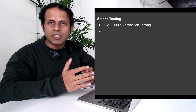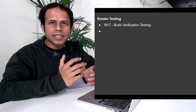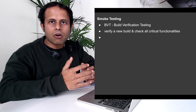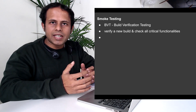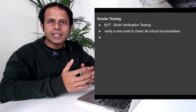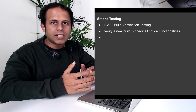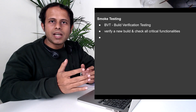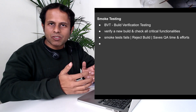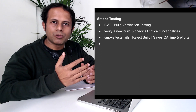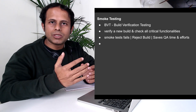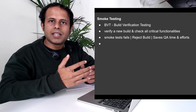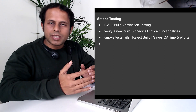Smoke testing is done to check that all the critical functionalities are working. As soon as we get a new build, we run a set of tests called a smoke test, which verifies that the critical functionality is working. In case something critical is missing, we can reject the build right there and not send it for further testing, so the QA team does not waste their time and effort.